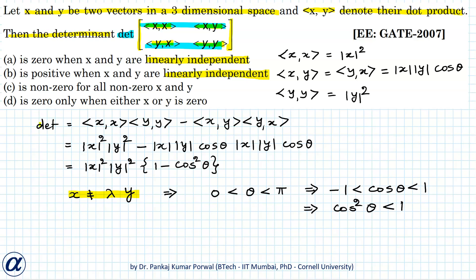So the determinant, which equals magnitude of x squared times magnitude of y squared times (1 minus cos squared theta), will be strictly greater than 0 when cos squared theta is strictly less than 1 — and that is the case when the vectors are linearly independent. Therefore, our determinant will be positive when x and y are linearly independent, so option B is correct.